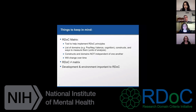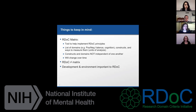The constructs and domains are thought to function interdependently and affect each other. For example, the RDoC domains of positive valence systems and negative valence systems do affect each other and cognition as well — emotion affects cognition, but they're still distinct domains of behavior. Finally, the matrix is not set in stone; it is expected to evolve as research accumulates.